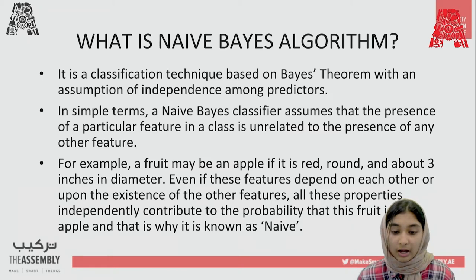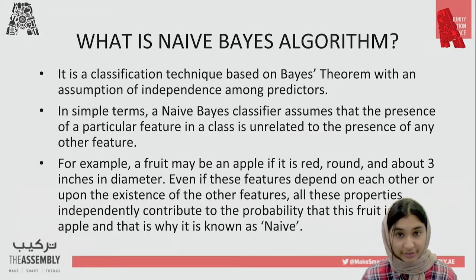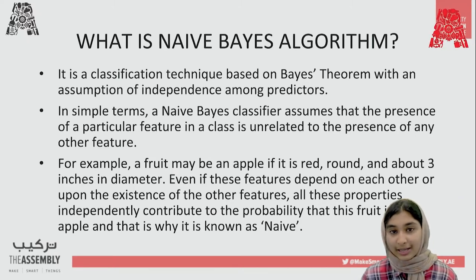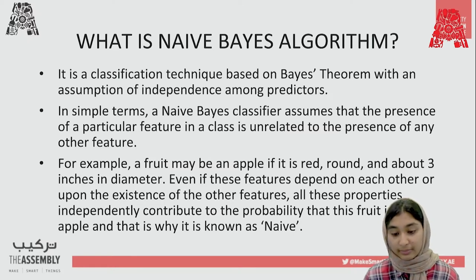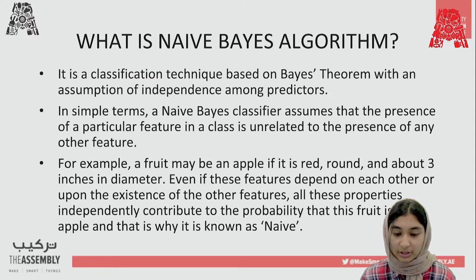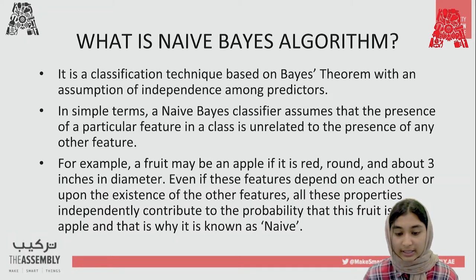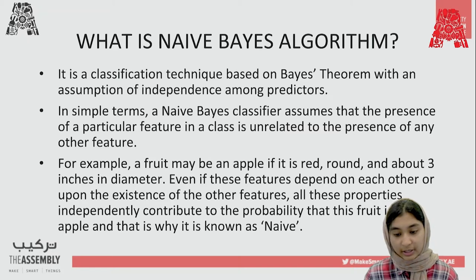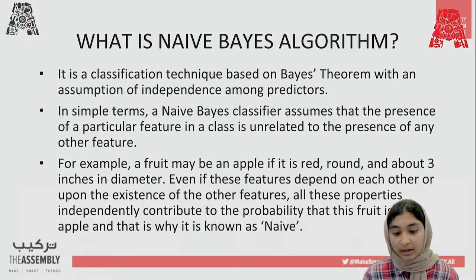A Naive Bayes classifier assumes that the presence of a particular feature in a class is unrelated to the presence of any other feature. For example, if a fruit is red, round, and three inches in diameter, we assume it to be an apple. Even if these features depend on each other, all these properties independently contribute to the probability that this fruit is an apple, which is why it is called Naive — naive means independent.